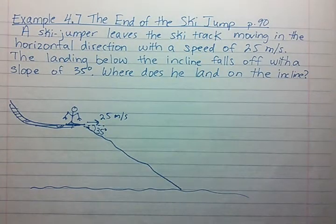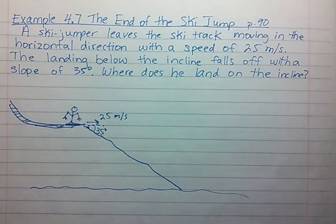In this video we are going to be solving example 4.7 page 90 of the AP Physics textbook. This problem is called the end of the ski jump. A ski jumper leaves the ski track moving in the horizontal direction with a speed of 25 meters per second. The landing below the incline falls off with a slope of 35 degrees. Where does he land on the incline?